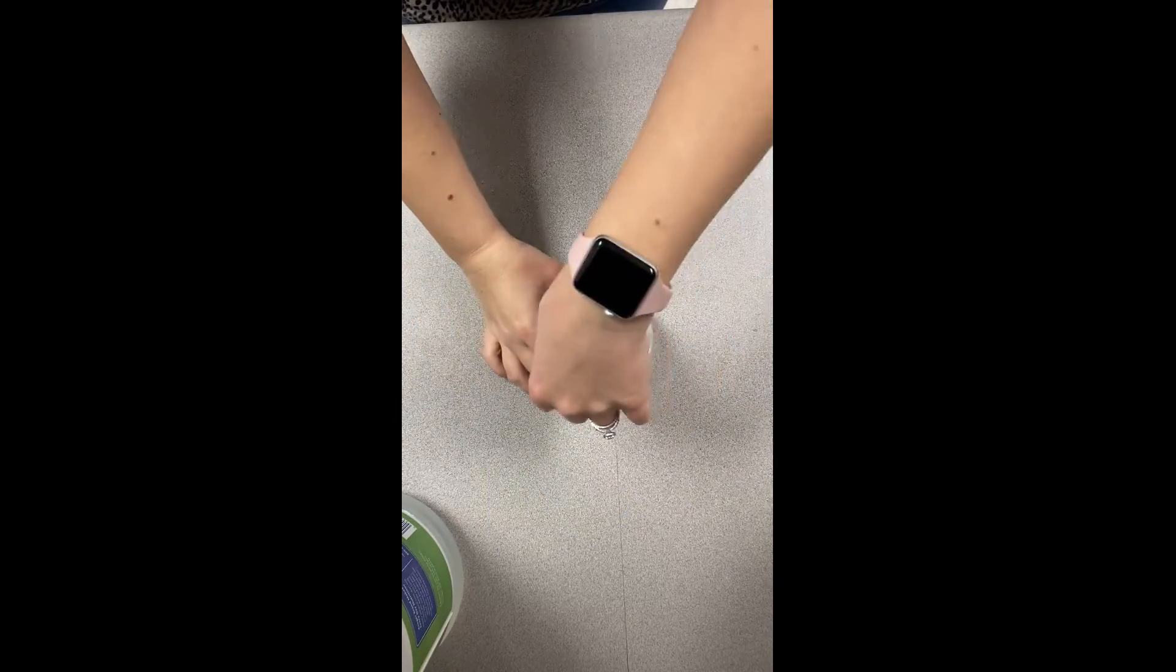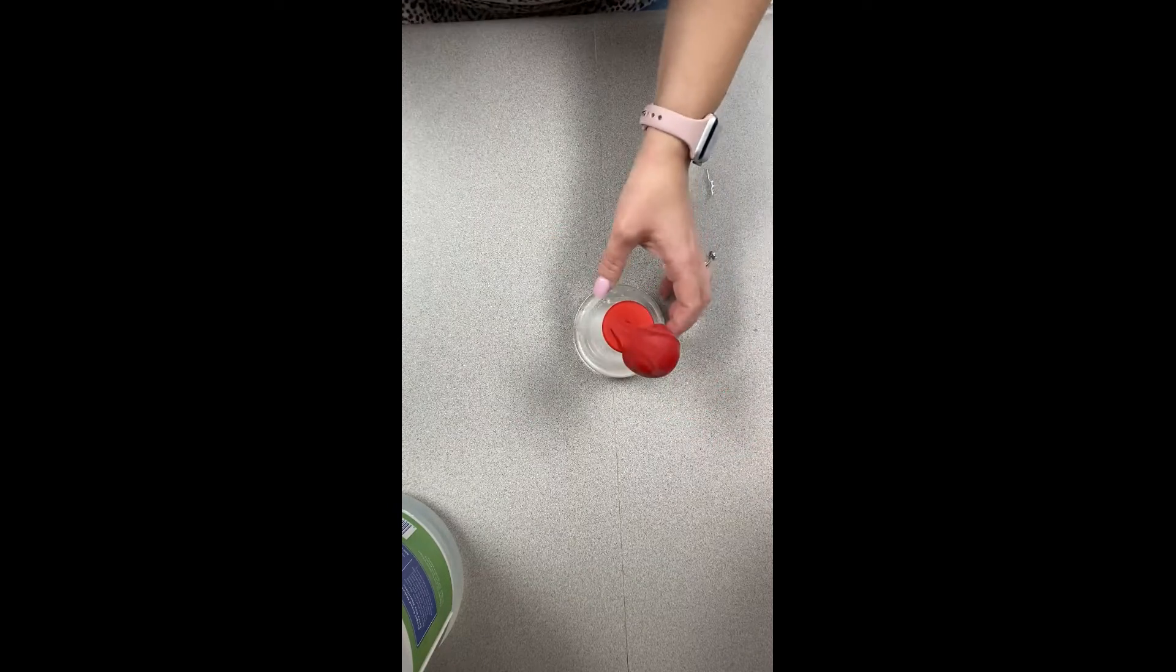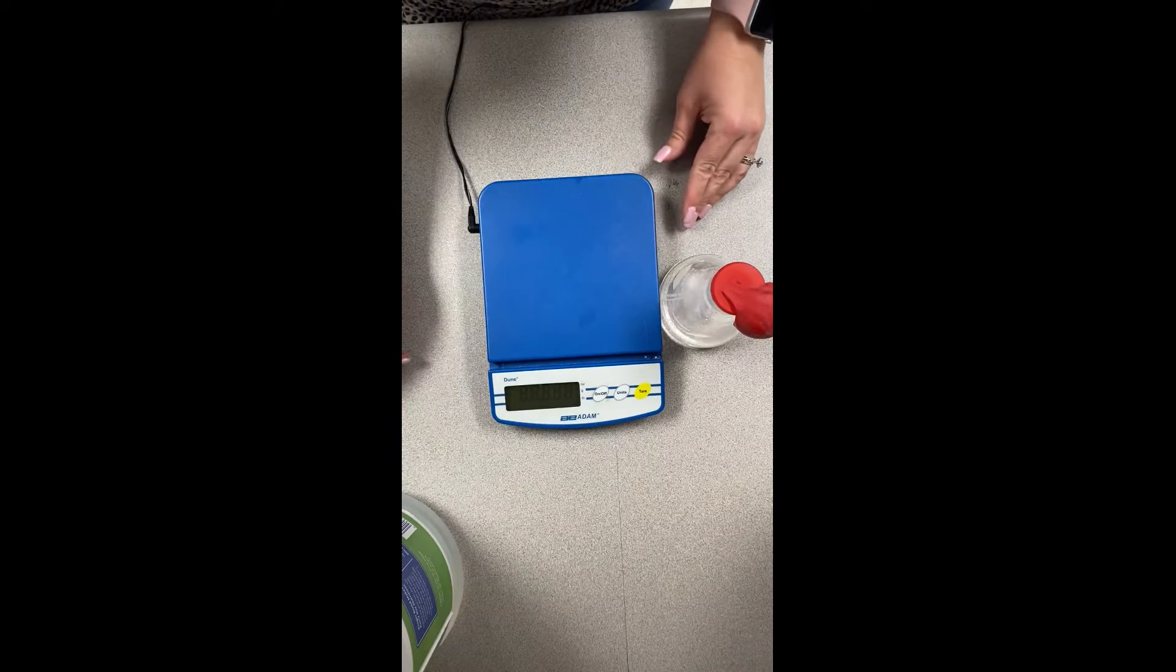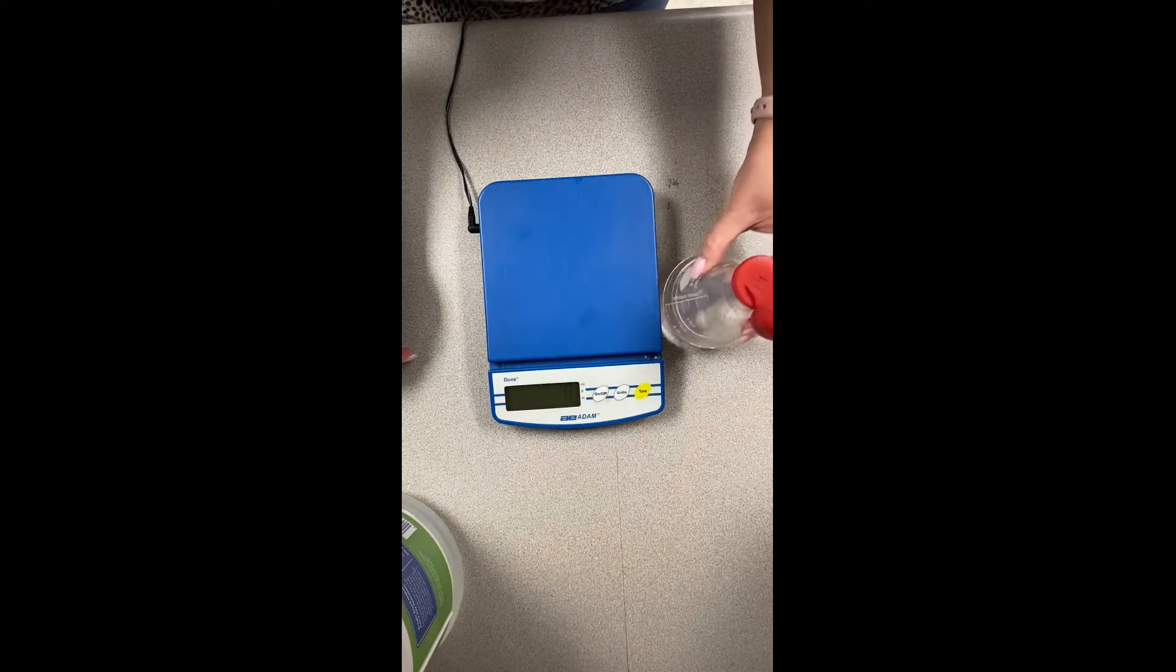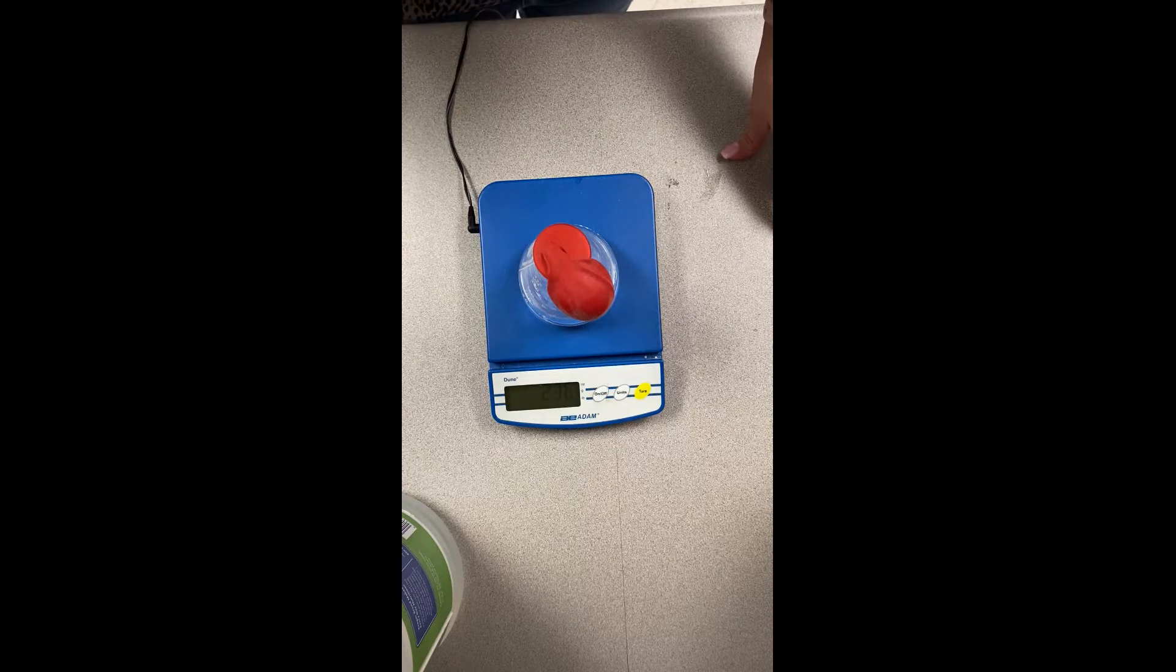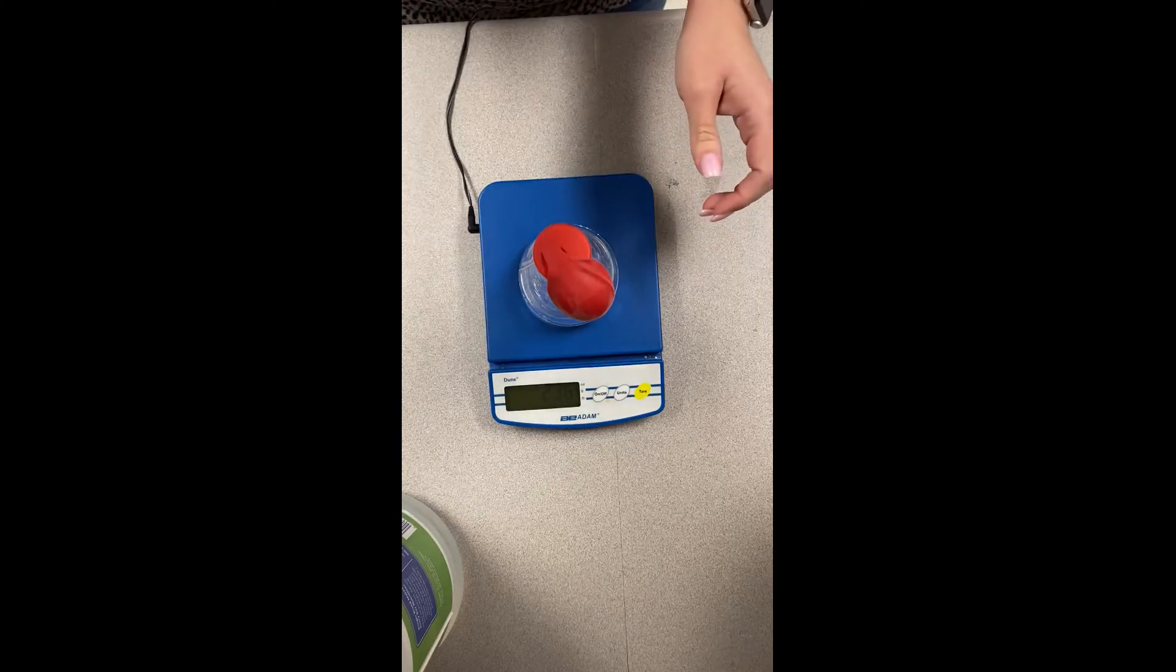Okay, we're going to start with our closed system and you can see I put a heaping spoonful of baking soda inside a balloon and put it on top of a flask that has a little bit of vinegar at the bottom. I'm going to take the mass of it now and you can see that it says 236 grams. Go ahead and put that as your initial.